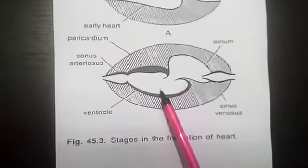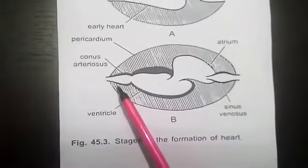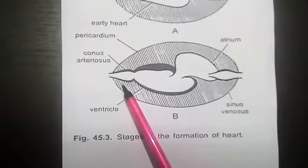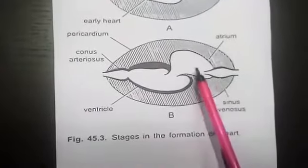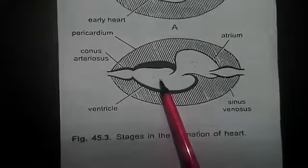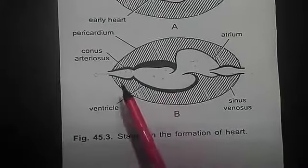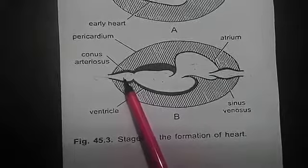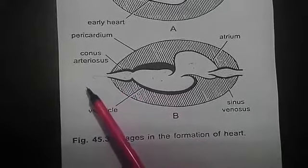a muscular ventricle and a muscular conus arteriosus or the bulbus cordis. Blood enters into atrium through sinus venosus, passes to ventricle. Ventricle pumps the blood into conus arteriosus which is continuous with ventral aorta.